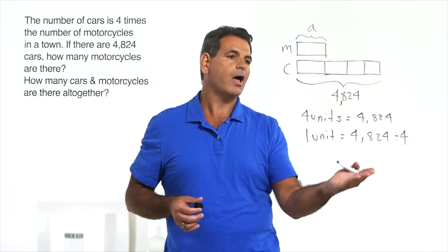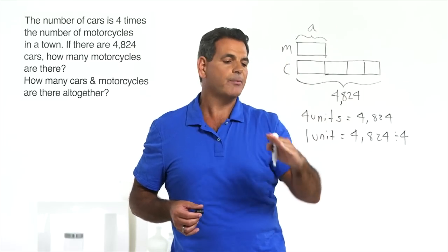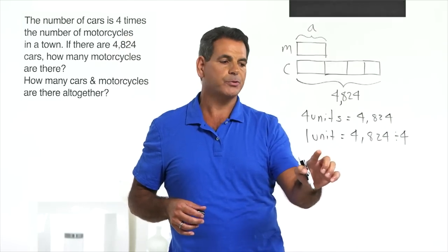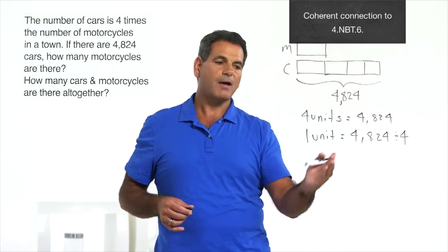Make sense? If four units are 4,824, one unit is 4,824 divided by 4. This is important because later on they might have to find out how many three units are, how many four units are. In this case, we're only doing one unit. So we solve the problem.